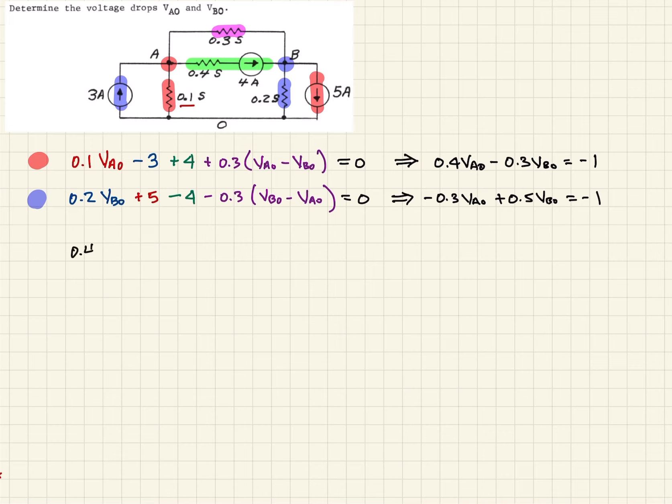We'll have 0.4 minus 0.3 minus 0.3 and 0.5 - this is the coefficient matrix - and it's times our variable matrix VA0 VB0, and this is going to be equal to minus 1 minus 1.